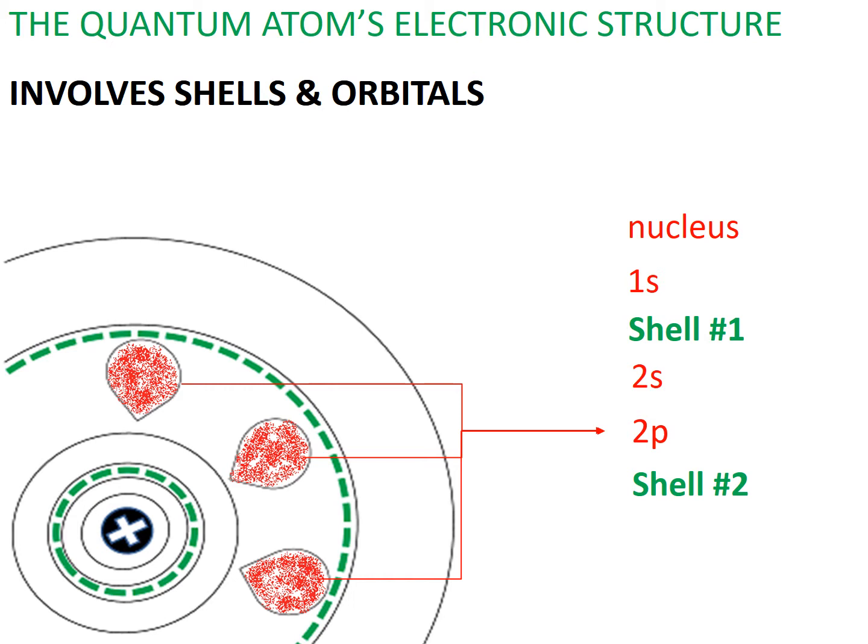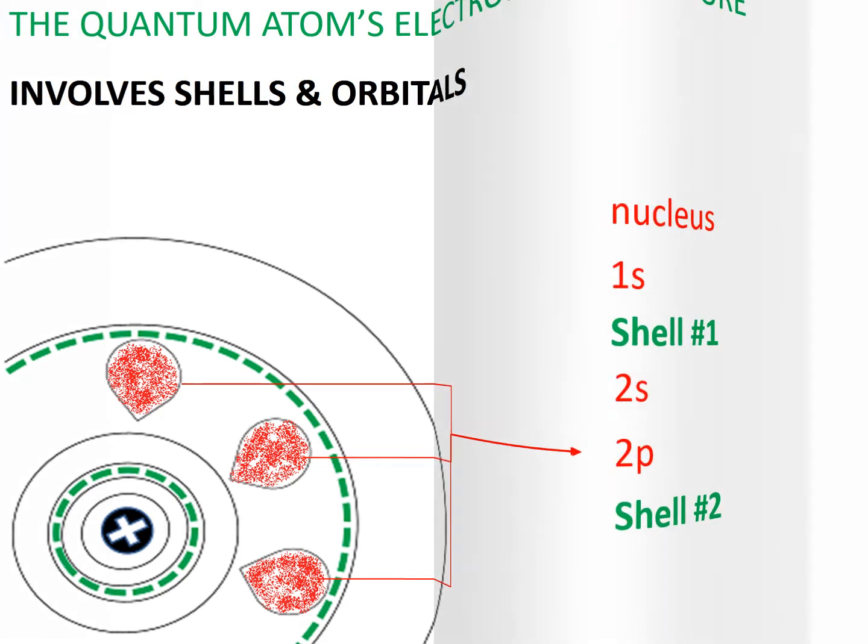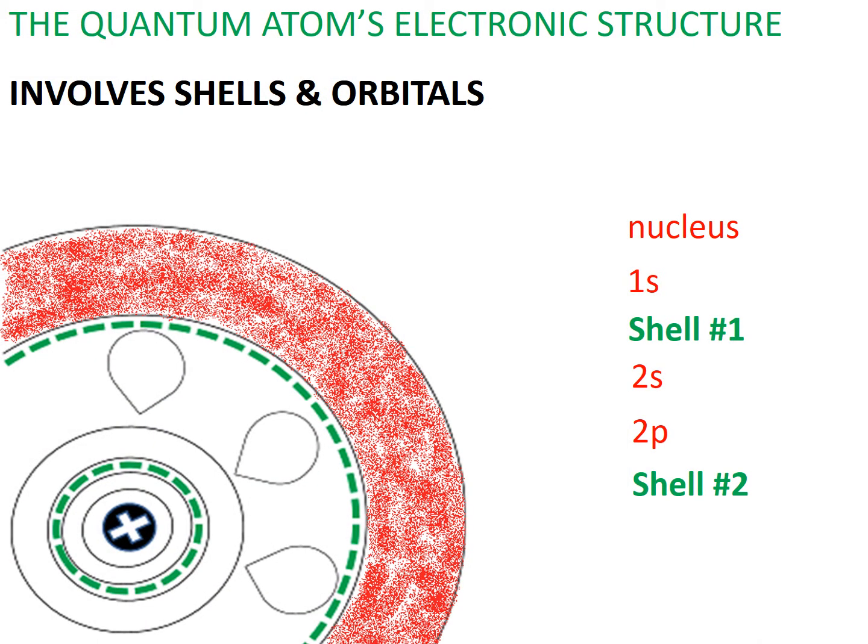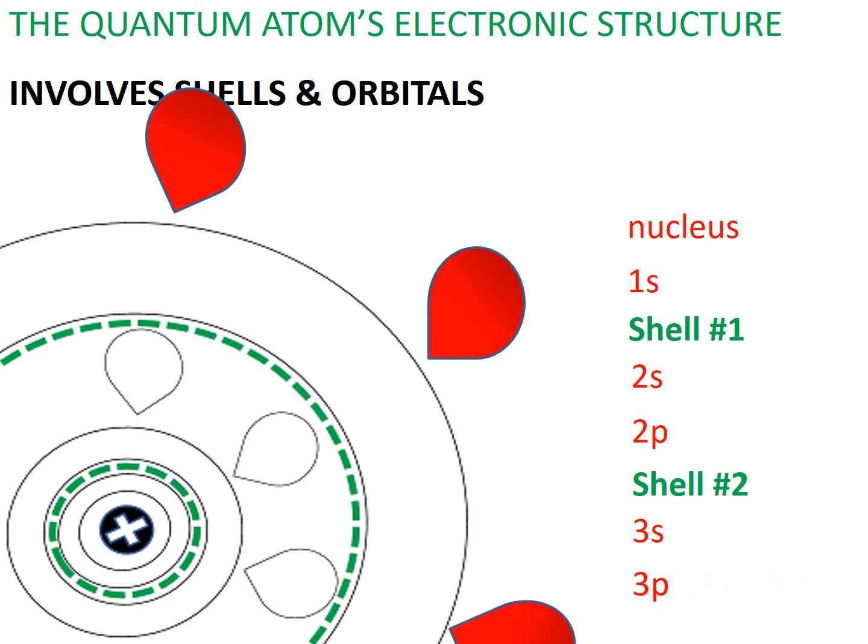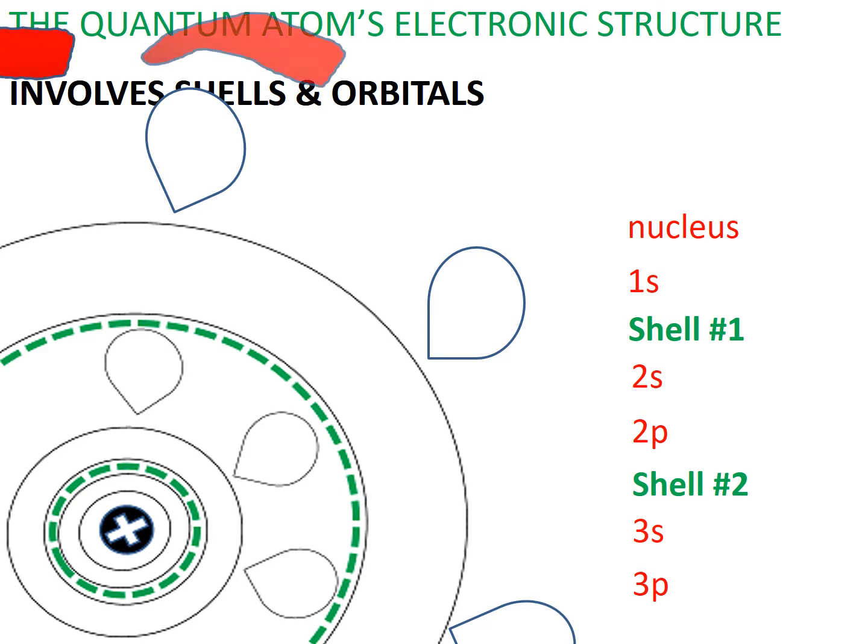Of course, when you venture past the boundary of the second shell, you will enter the third shell. Where just outside the second shell is the 3s orbital, a region just like 1s and 2s that can occupy a maximum of 2 electrons. And if there was enough space, I would add the 3p orbitals, which like the 2p orbitals, hold a maximum number of 6 electrons. As well as the dreaded 3d orbitals, regions within the third shell that can occupy a maximum of 10 electrons.